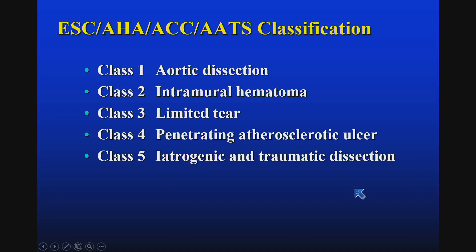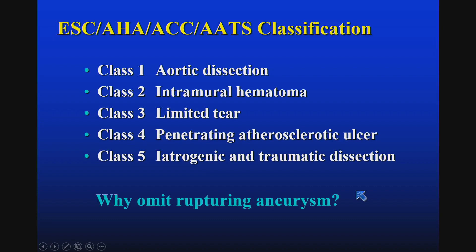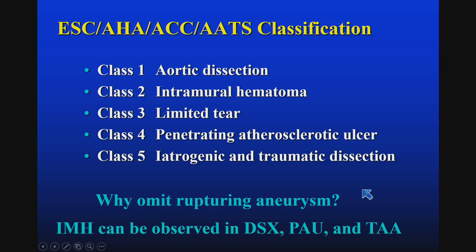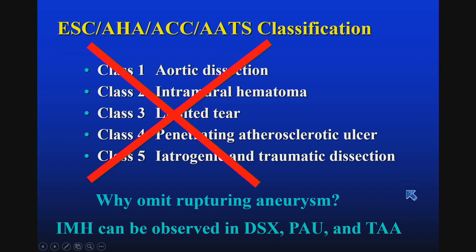We don't really talk about these as classes of aortic injuries. Also, why is rupturing aneurysm excluded from this spectrum of diseases? Likewise, intramural hematoma — the class 2 area here — is observed in dissection, penetrating ulcer, and rupturing thoracic aortic aneurysm. It is often a manifestation of an acute process change in these diseases, so I don't prefer to use this classification.